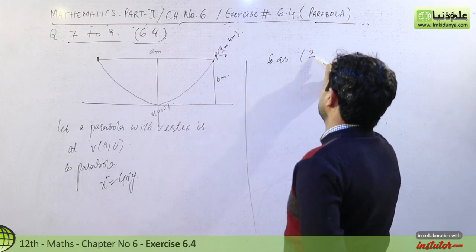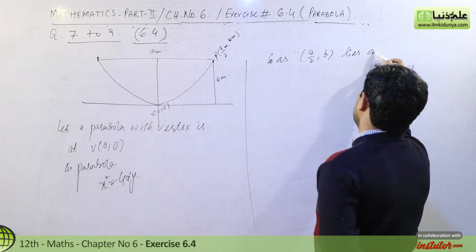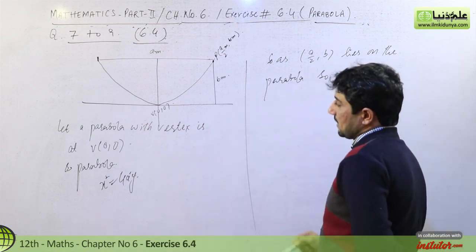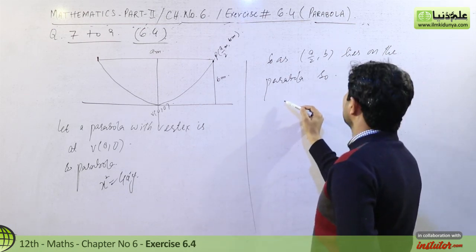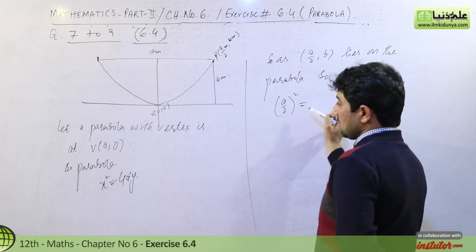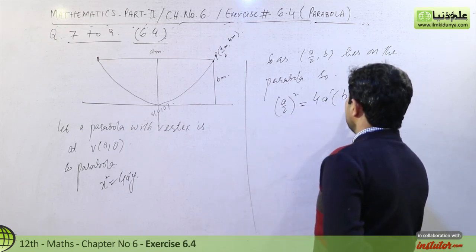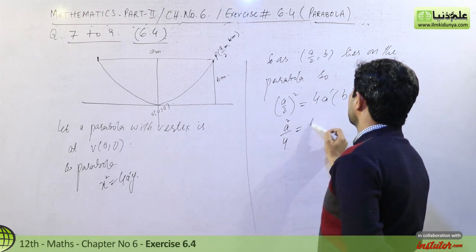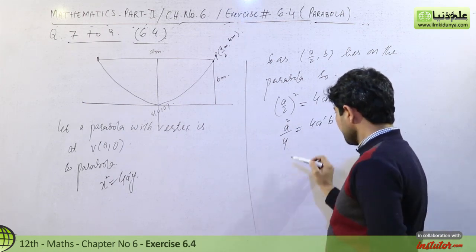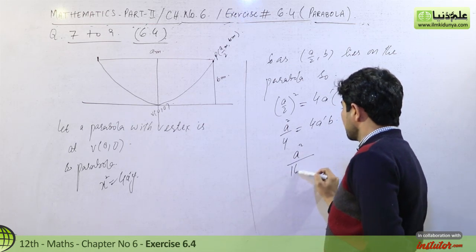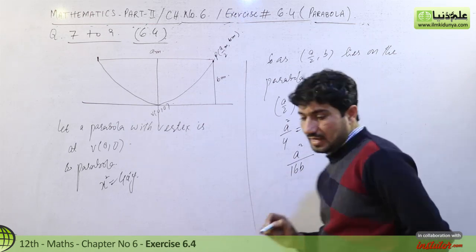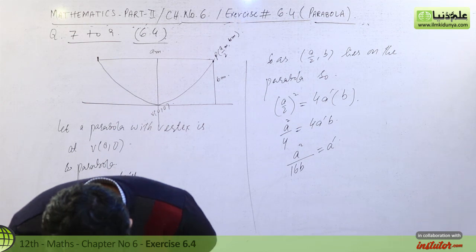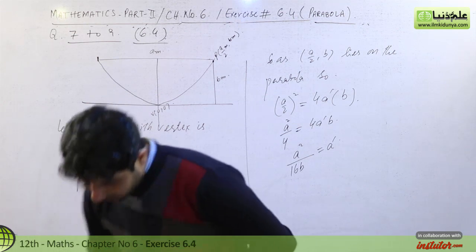Since the point (a/2, b) lies on the parabola, it must satisfy the equation. So (a/2)² = 4a'·b, which gives a²/4 = 4a'b. Therefore a' = a²/16b. This is the value of a' that we will now use in the equation.